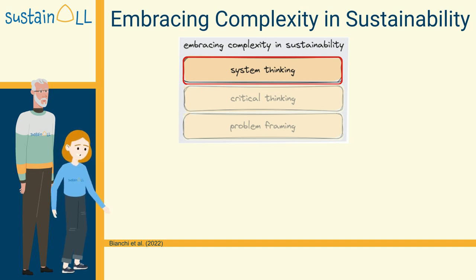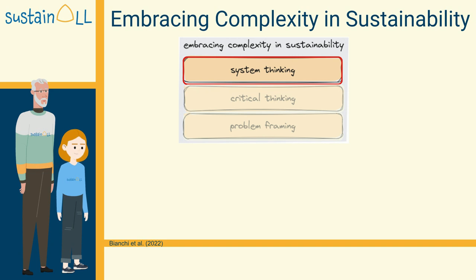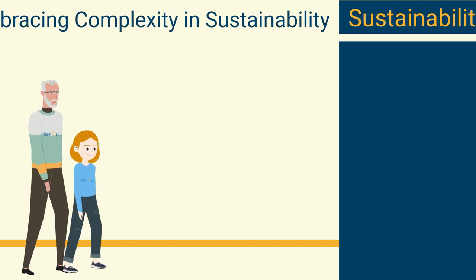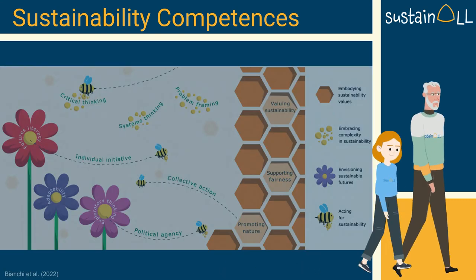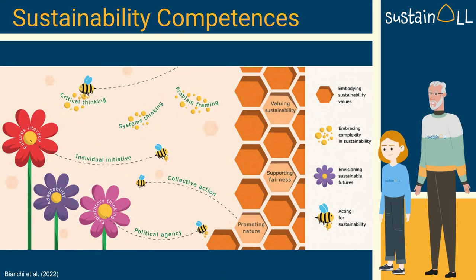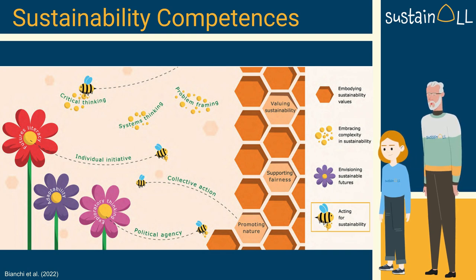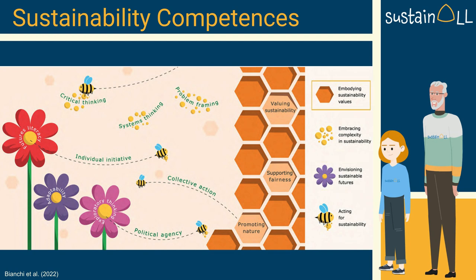You described exemplary aspects of competence related to systems thinking, but there are more aspects. Systems thinking is just one example of the many competences provided within the GreenComp framework. Here you see a visualization of the GreenComp framework. Bees represent competences related to acting for sustainability. Flowers represent competences related to envisioning sustainable futures. The beehive represents competences related to embodying sustainability values. Pollen and nectar represent competences related to embracing complexity in sustainability: systems thinking, critical thinking, and problem framing.